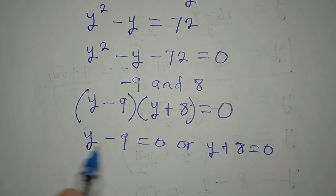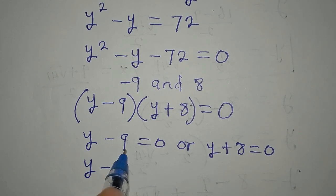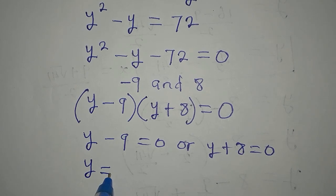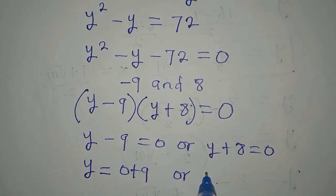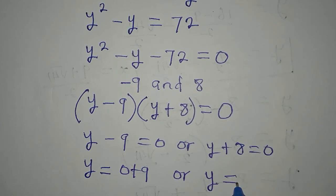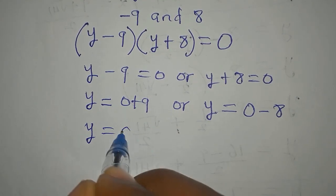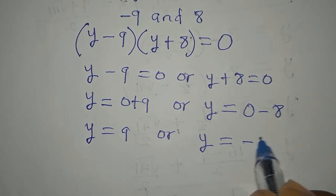So from here, y minus 9 equals 0, so that means y is equal to 0 plus 9. Or on this side, y is equal to 0 minus 8. So we have y to be 9 or y is minus 8.